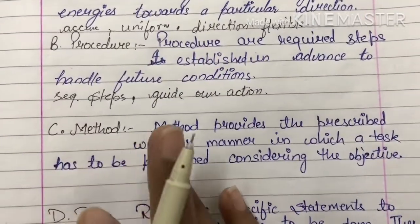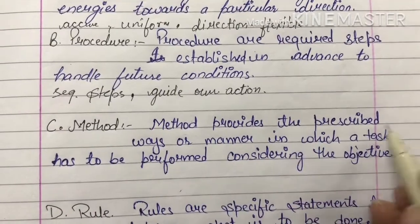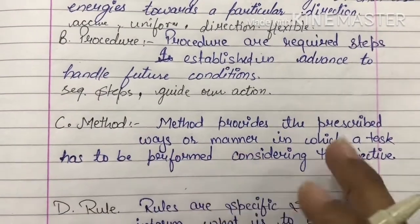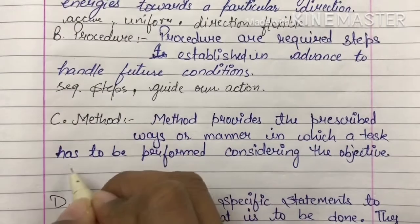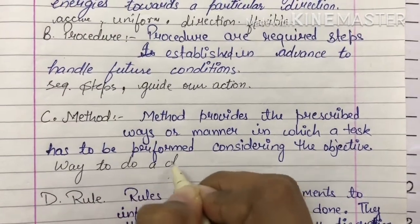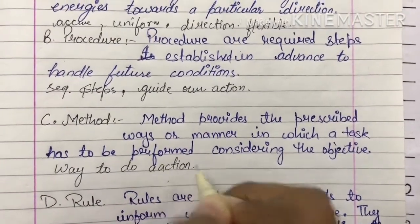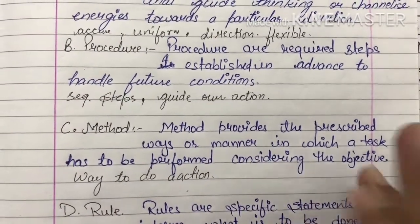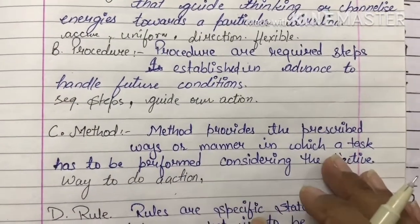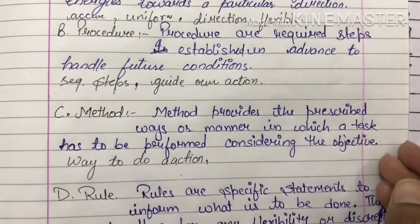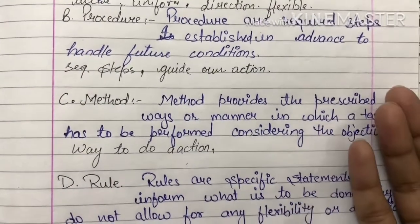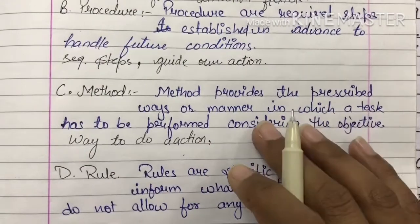Method provides the prescribed way or manner in which a task has to be performed considering the objectives. किसी भी काम को करने का एक particular तरीका होता है — the way to perform a task, the way to do an action. हमारे क्या-क्या steps होंगे उसे हम method कहते हैं. जैसे कि business में production activities को technical aspect से लेते हो, या workforce से maximum कराते हो — यानि capital intensive methods लेते हो या labor intensive methods लेते हो production में.